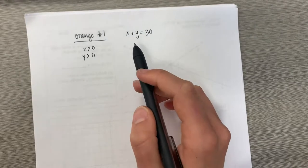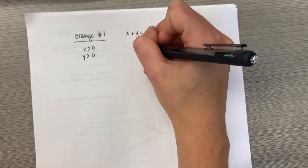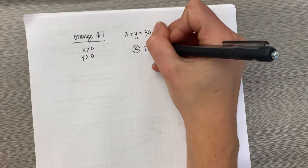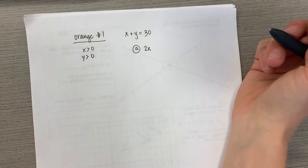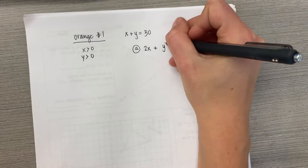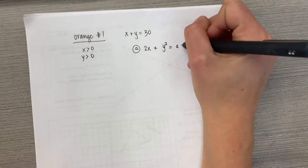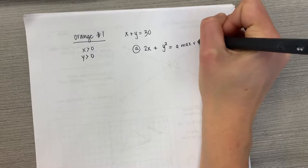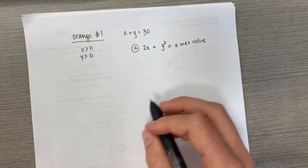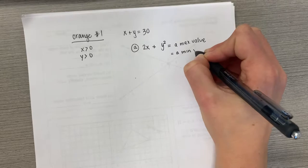Sum means we add them. Find both numbers if the sum of twice the first, so let's just call x the first one, twice the first plus the square of the second is a maximum. And then part b asks for this being a minimum value.